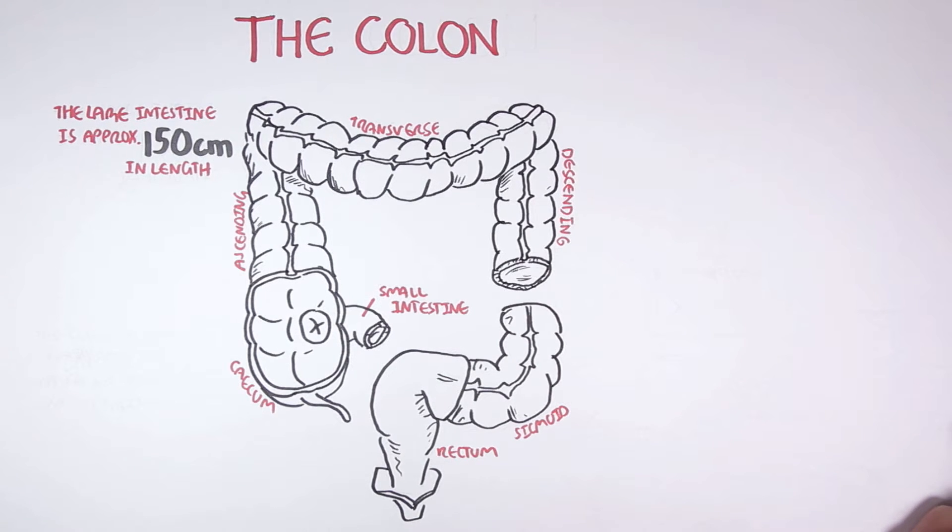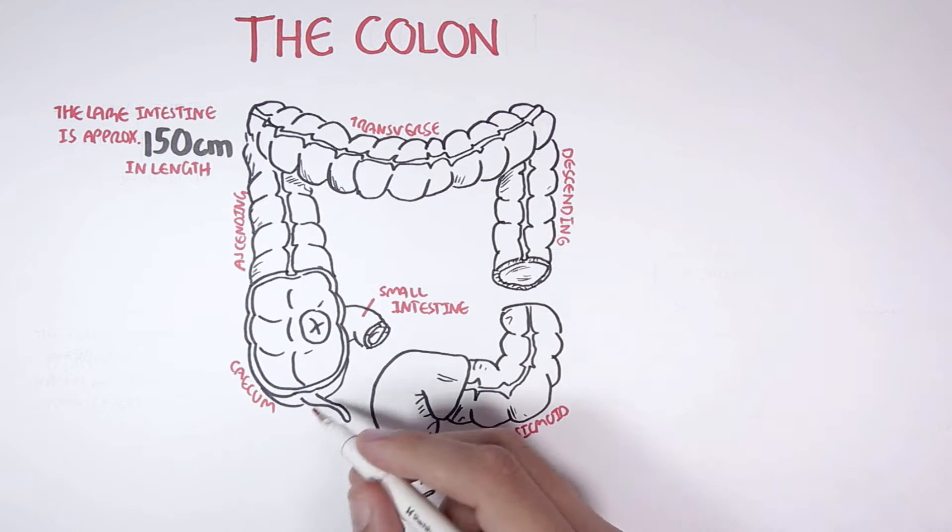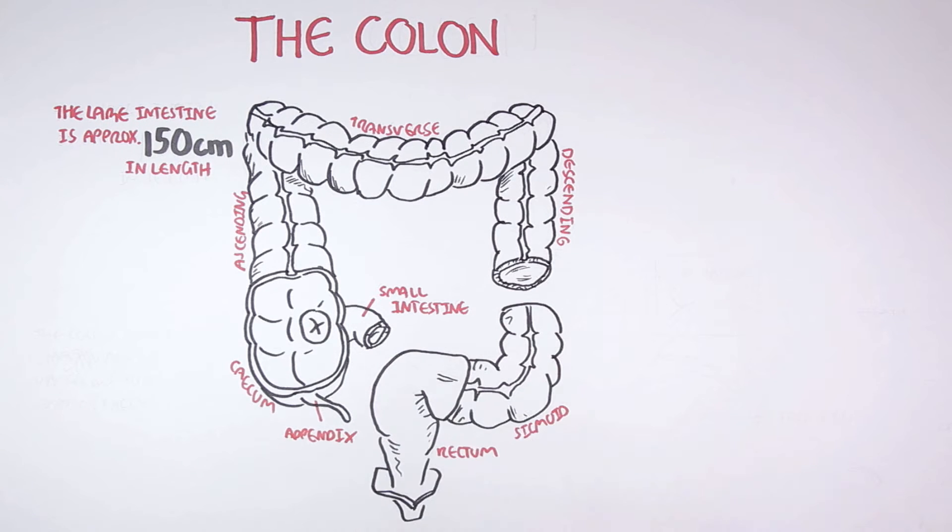Waste is excreted through the rectum and anus. The appendix here is a pouch structure that connects the cecum and is thought to have a role in the immune system.